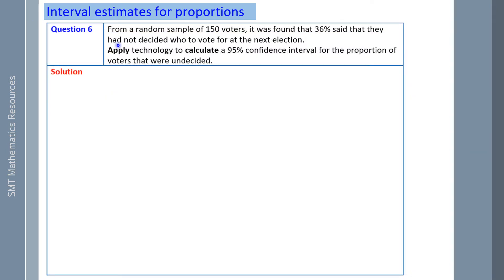Question 6: From a random sample of 150 voters, it was found that 36% said that they had not decided who to vote for at the next election. Apply technology to calculate a 95% confidence interval for the proportion of voters that were undecided.